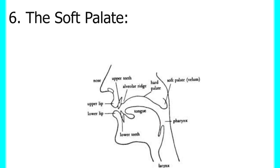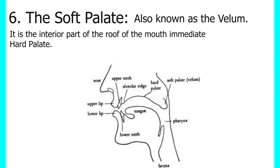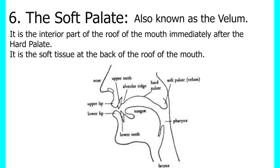Then we have the soft palate. The soft palate is also known as the velum. It is the posterior part of the roof of the mouth, immediately after the hard palate. It is a soft tissue at the back of the roof of the mouth.